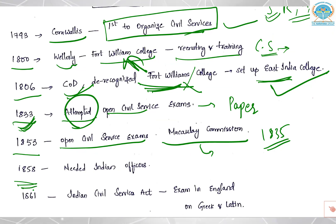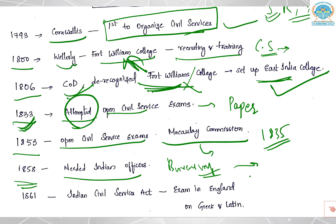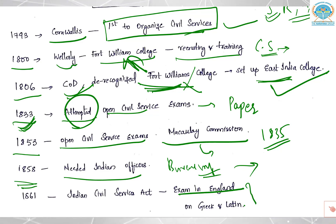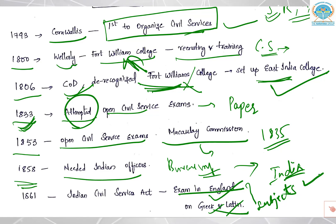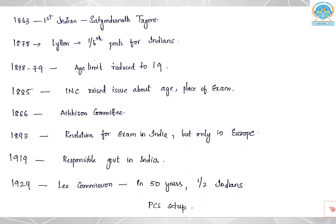In 1858, after the Sepoy Mutiny, they needed Indian officers in bureaucracy — not in higher or top official positions, just in subordinate posts. In 1861, the Indian Civil Services Act came, in which the exam was conducted in England on both Greek and Latin subjects. Greek and Latin are considered tough, and the exam was in England — not in India — so it was very difficult for Indians. Even in these toughest conditions, in 1863, the first Indian person who cracked the civil services exam was Satyindranath Tagore. This is important for prelims.